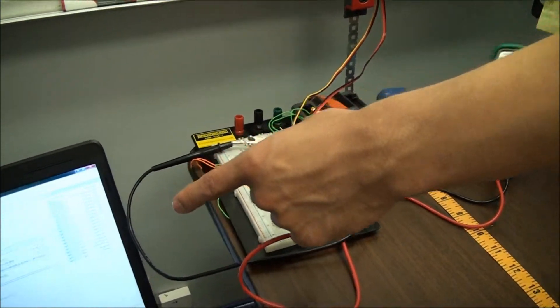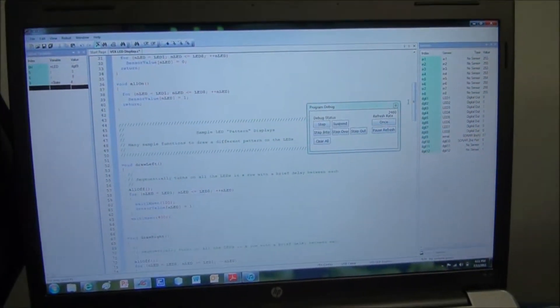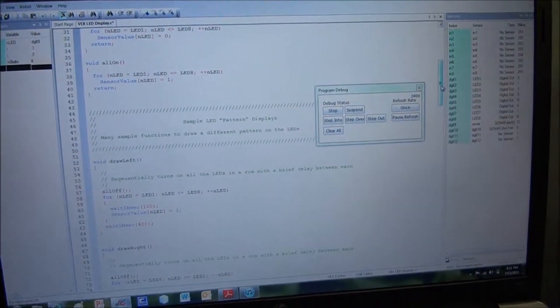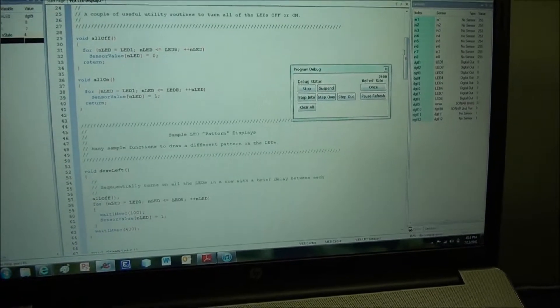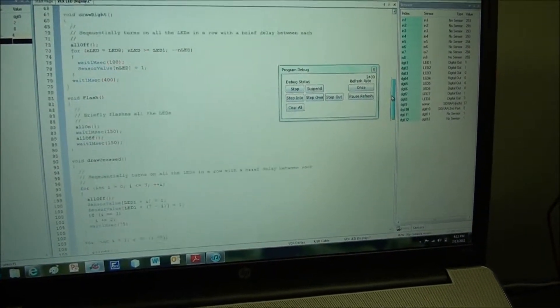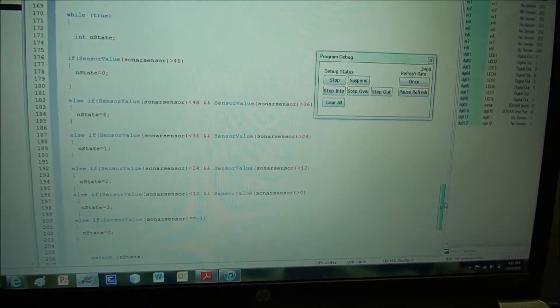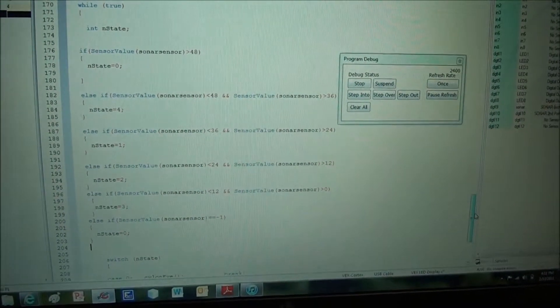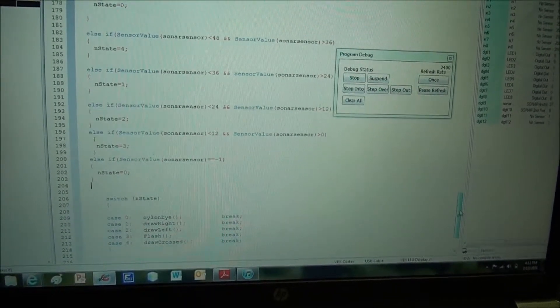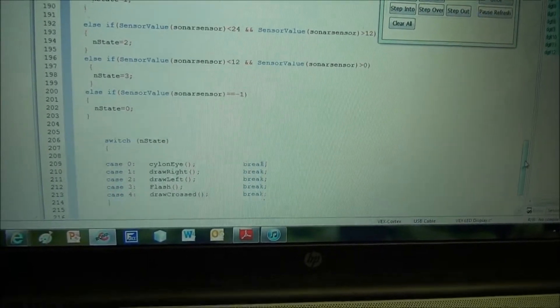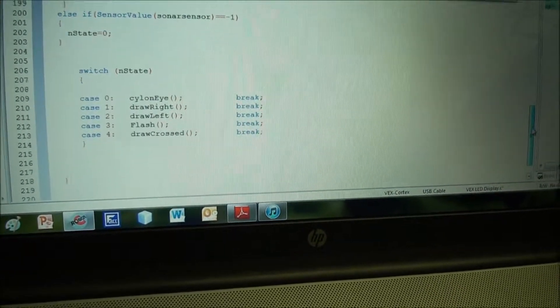Over here you can see our code. This is programmed in Robot C using C language, and we have a few defined LED functions. We're going to use these if statements to give the microcontroller a signal to play a different LED display for each range, and we're going to be doing this in the range of four feet, which I defined.